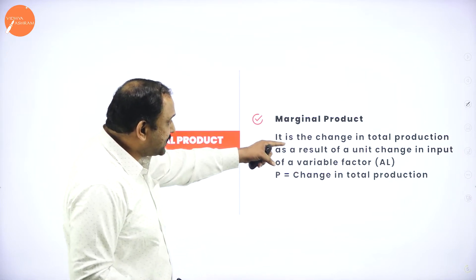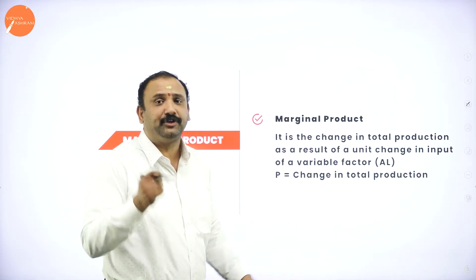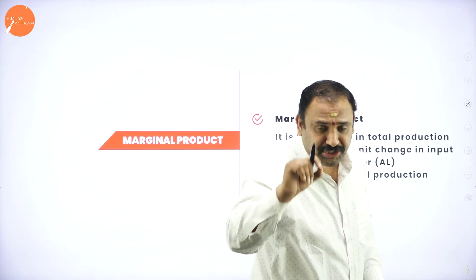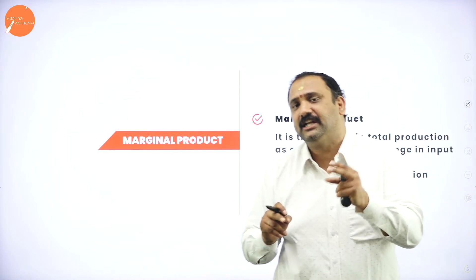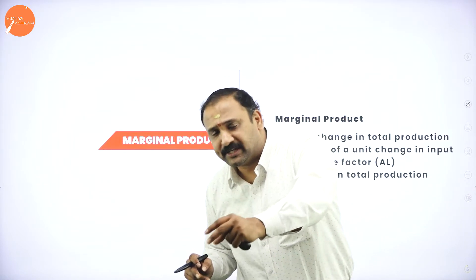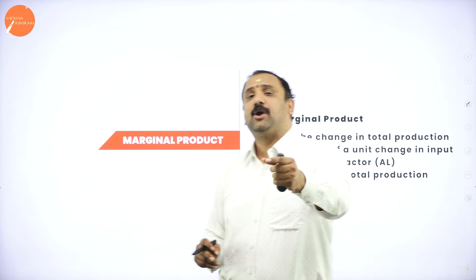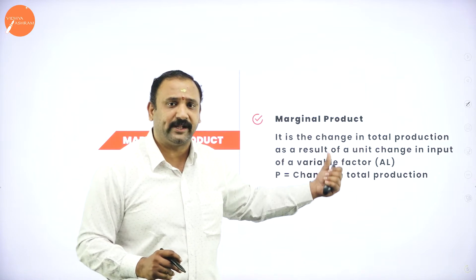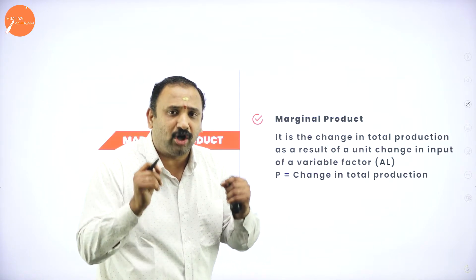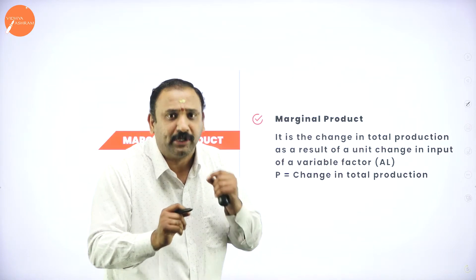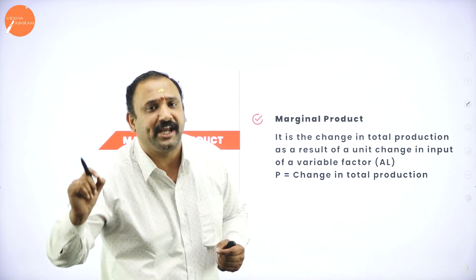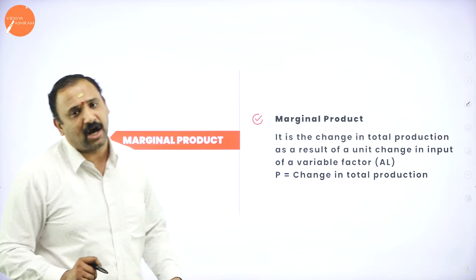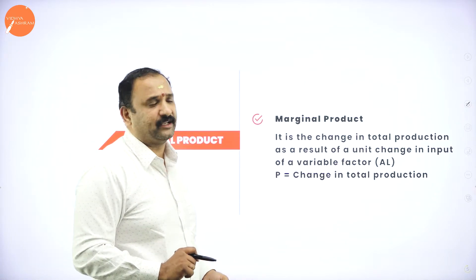Marginal product means the change in total production as a result of a unit change in input. Can a single unit, if introduced as an input factor into the scenario, change the output? If the answer is yes, then we are achieving the marginal product. For every small change in input, there is going to be a considerable change in the output — that is the marginal product factor.